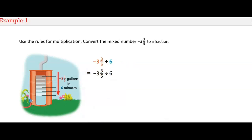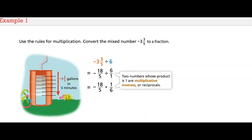You can also find the quotient by using the rules for multiplication. Begin by converting the mixed number negative three and three-fifths to a fraction. Five times three is fifteen, plus three is eighteen, so the fraction is negative eighteen-fifths. To divide two fractions, multiply the dividend by the reciprocal of the denominator. Two numbers whose product is one are multiplicative inverses, or reciprocals. Find the product of the fraction by multiplying the two numerators and the two denominators.